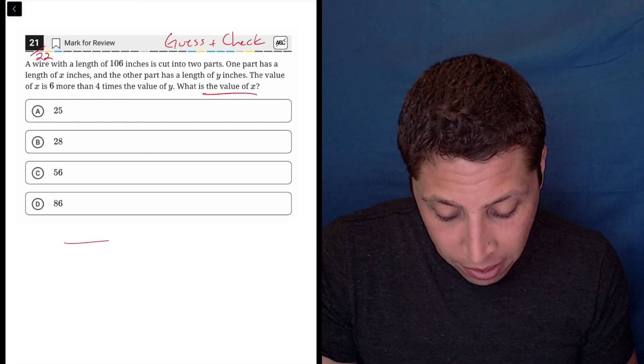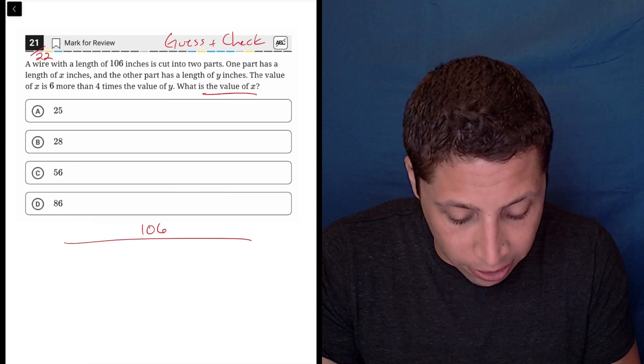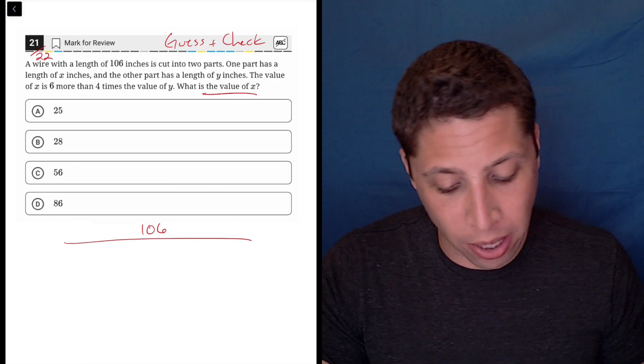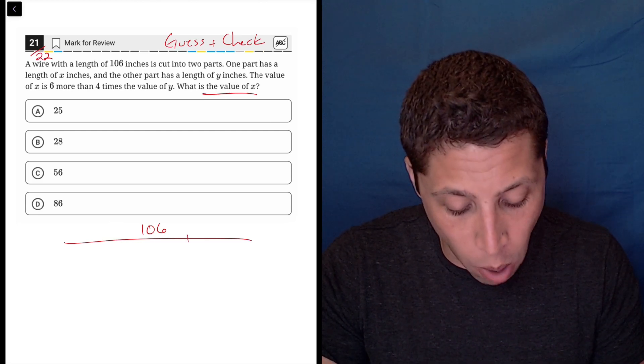So let's draw this thing. You have a wire, it's 106 total and it's composed of two pieces, X and Y. X is six more than four times the value of Y, so it sounds like Y is smaller.